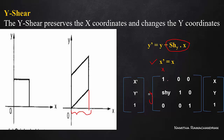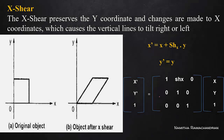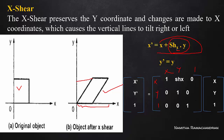Then we will add a unit matrix. We will add a modification to the y-row in the x-column position. We will add a unit matrix in the x-row in the y-column position.